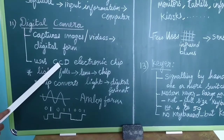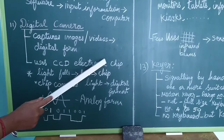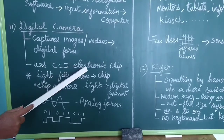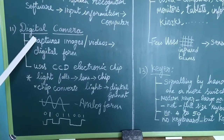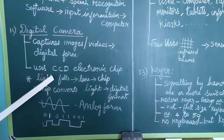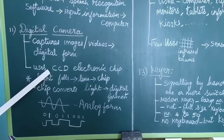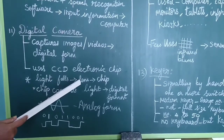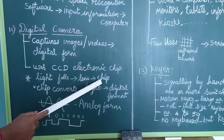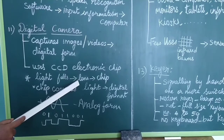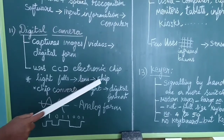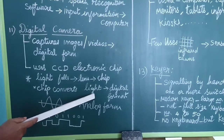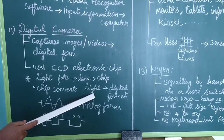In a digital camera, what is used is a CCD electronic chip. CCD stands for Charged Coupled Device. This CCD electronic chip is used inside the digital camera. The image is focused through the lens onto the electronic chip, and from the chip the image is captured.